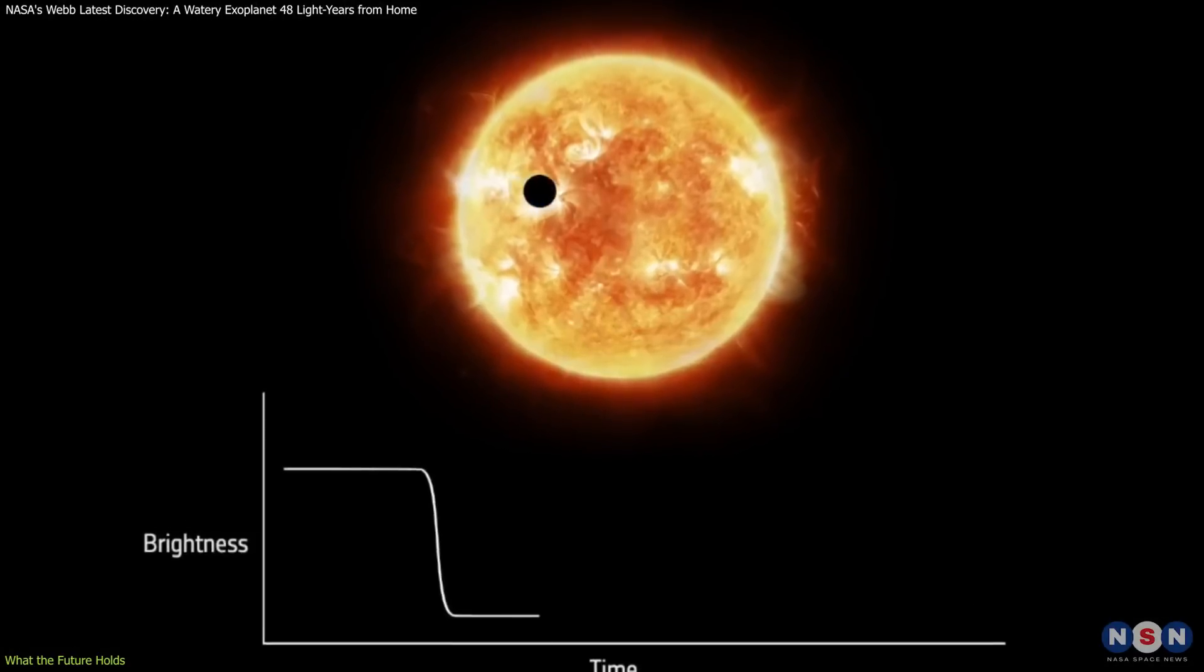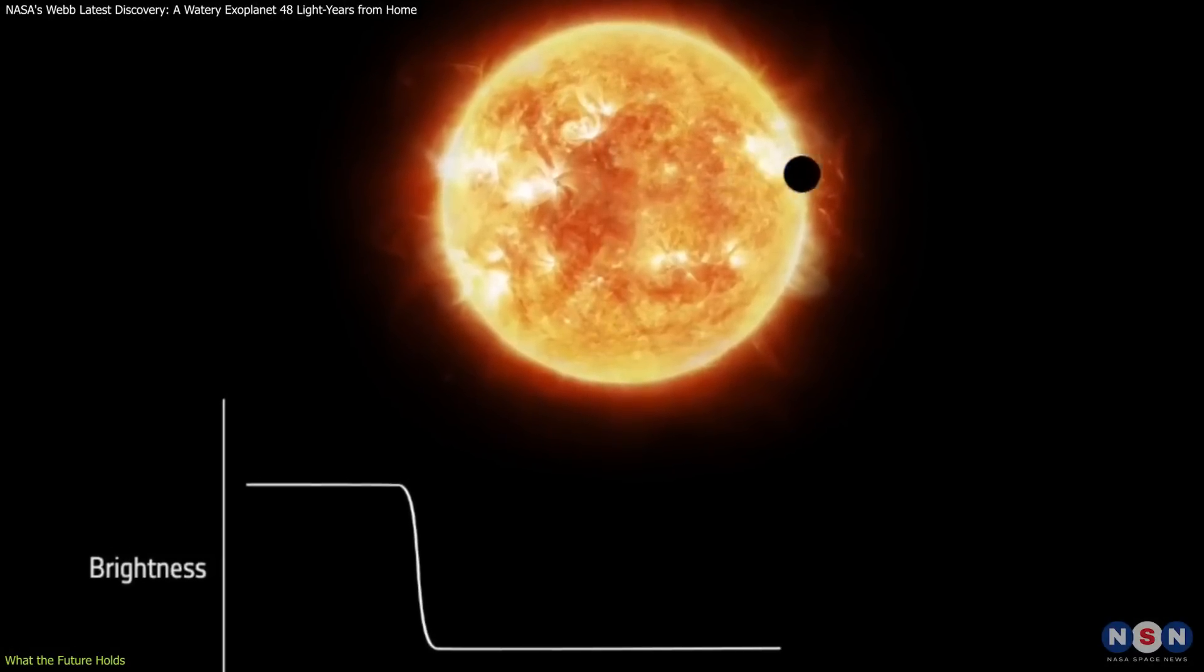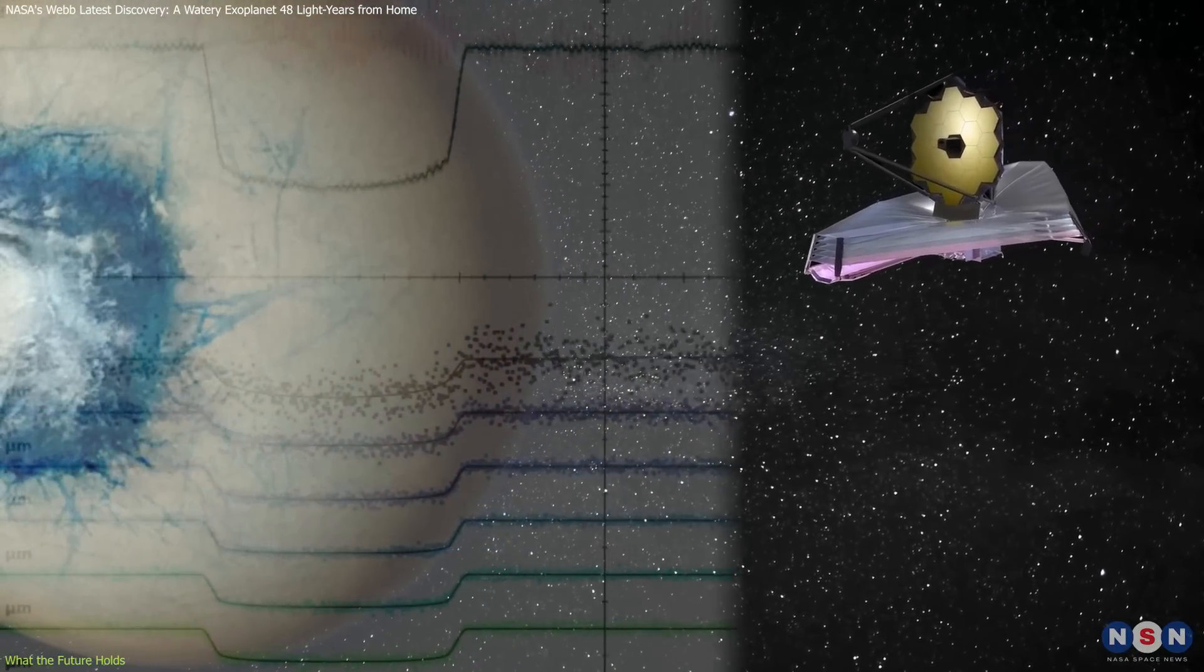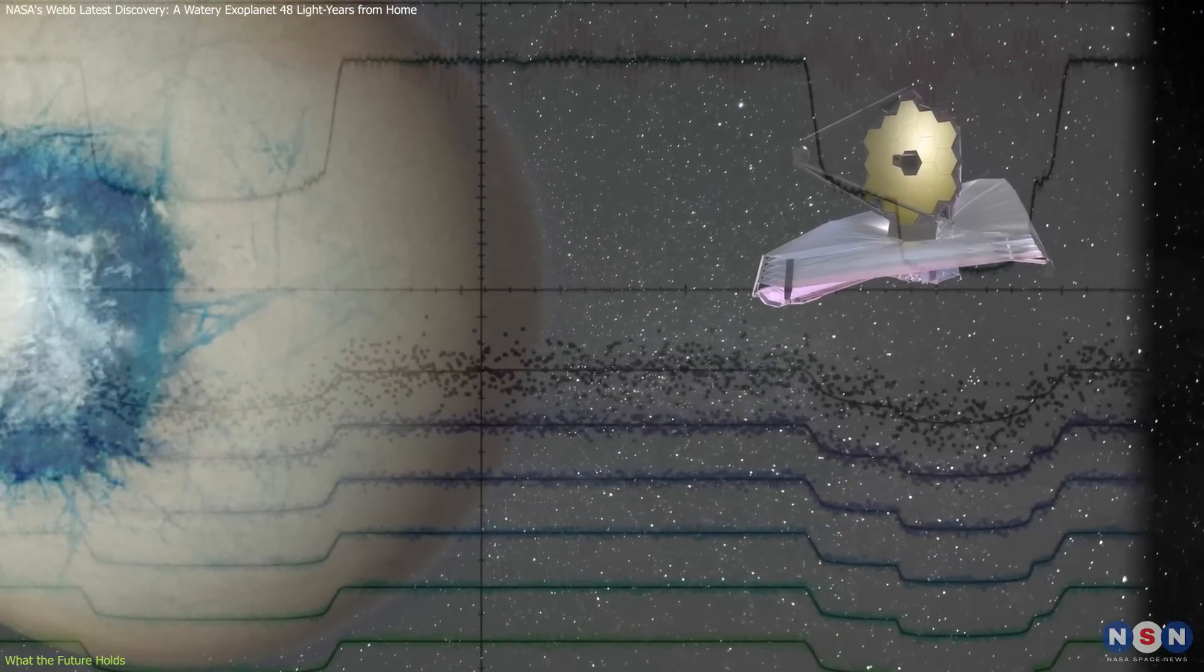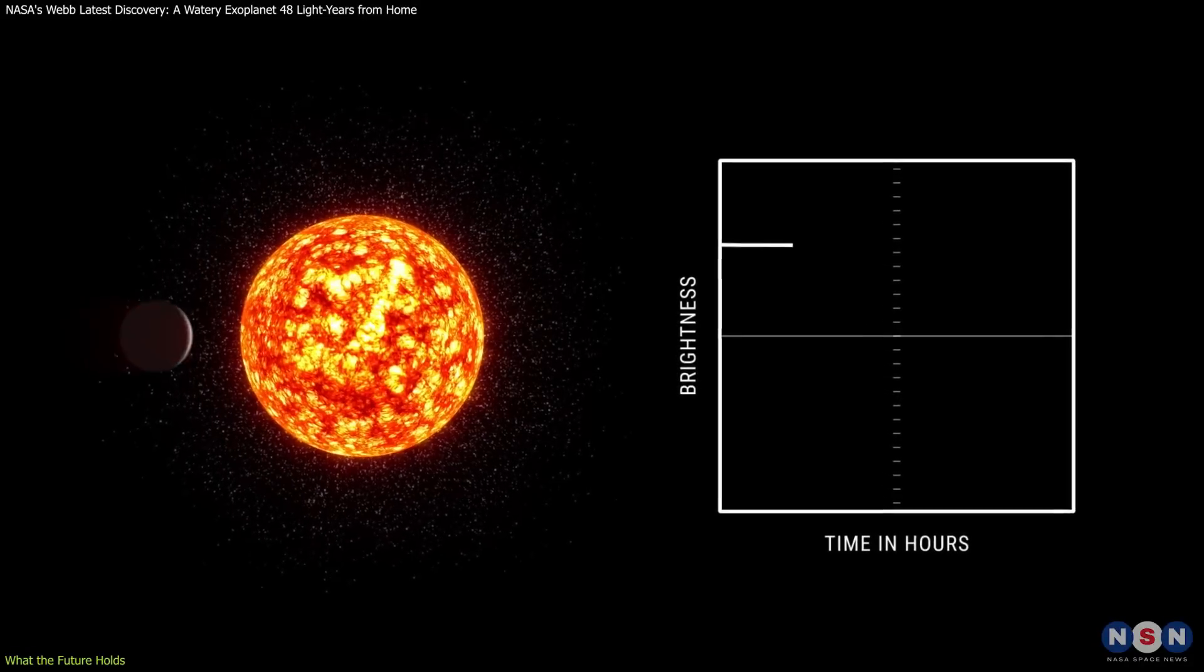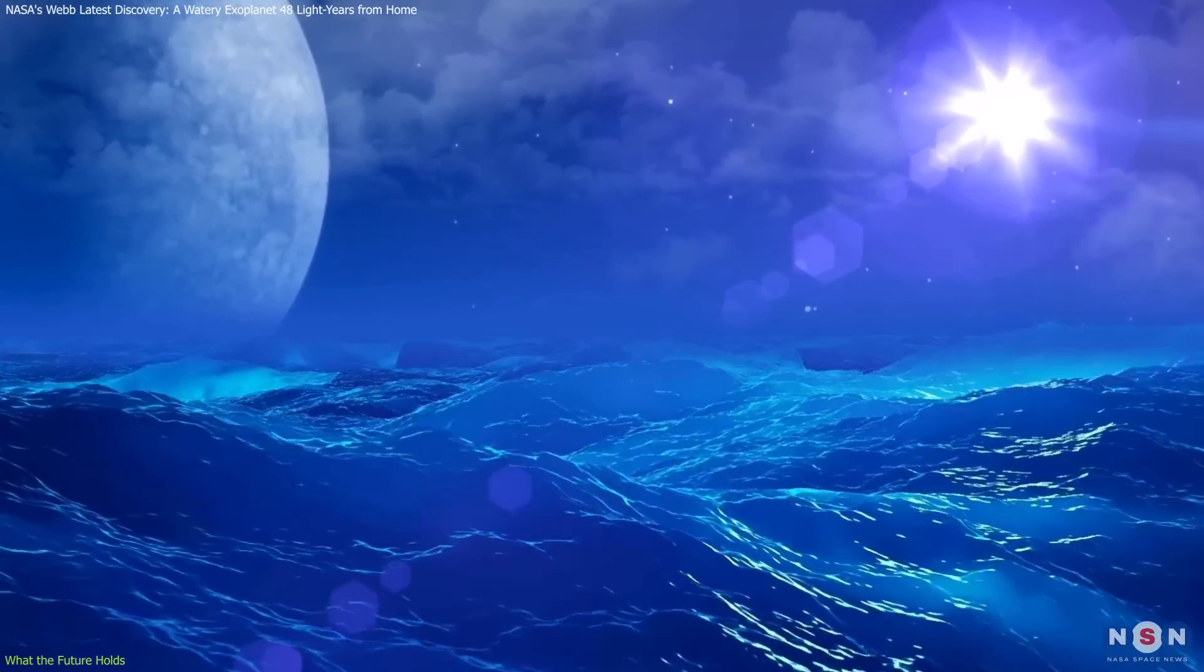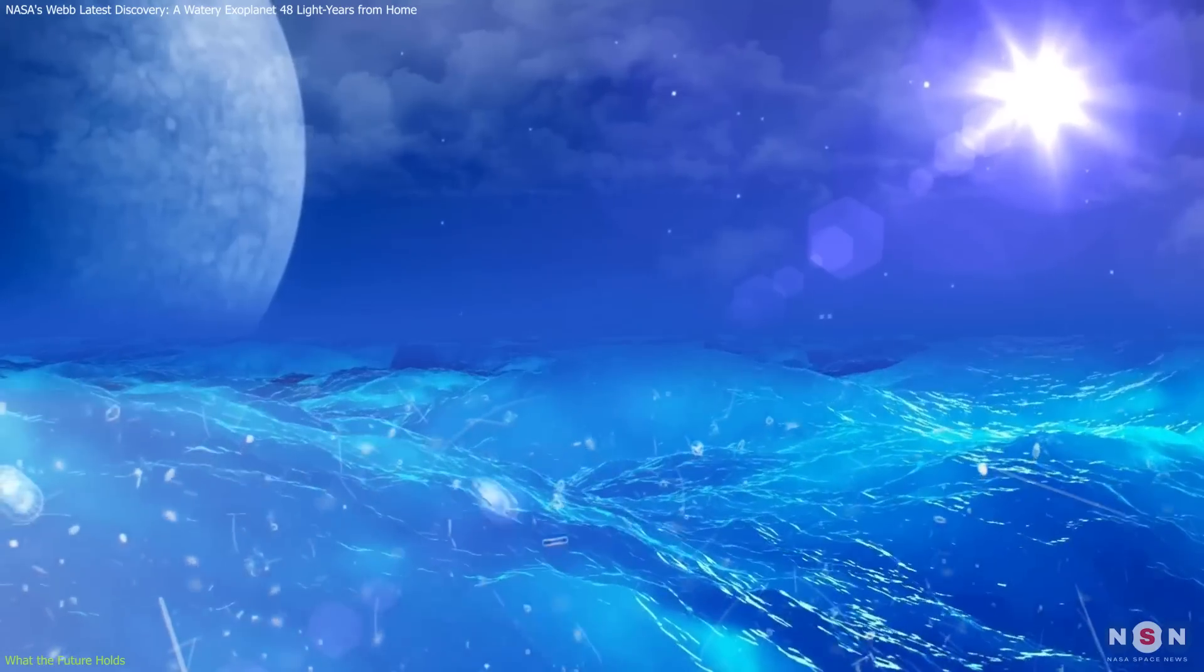Webb can only observe the planet's transit a few times a year, meaning that building a complete picture of this exoplanet's atmospheric makeup may take several years. However, each piece of data adds to a growing body of knowledge that could eventually confirm the presence of an ocean, or even life, in another world.